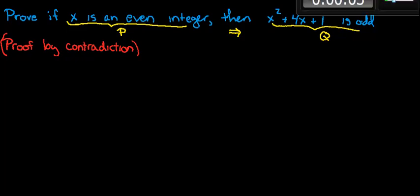Hello, in this video we're going to examine a proof by contradiction, and our claim is if x is an even integer, then x squared plus 4x plus 1 is odd.